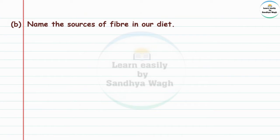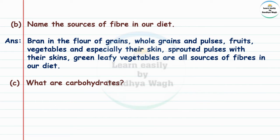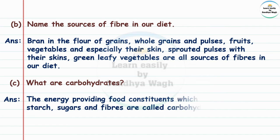Question 5b: Name the sources of fiber in our diet. Answer: Bran in the flour of grains, whole grains and pulses, fruits, vegetables and especially their skin, sprouted pulses with their skins, and green leafy vegetables are all sources of fiber in our diet.